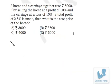Now this query: a horse and a carriage together cost rupees 8000. If by selling the horse at a profit of 10% and the carriage at a loss of 10%, a total profit of 2.5 percent is made, then what is the cost price of the horse? Now this problem can be solved very easily by the method of allegation.